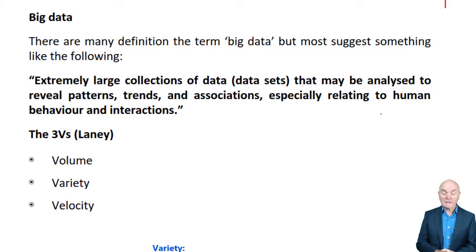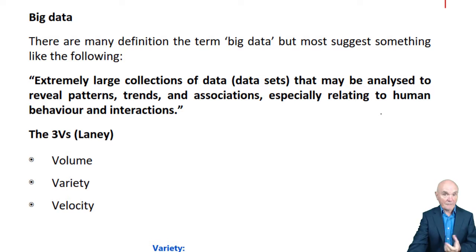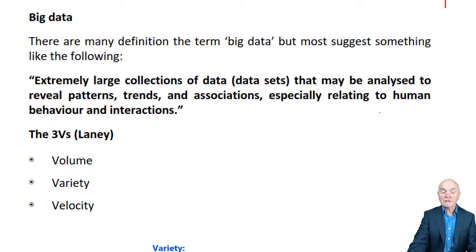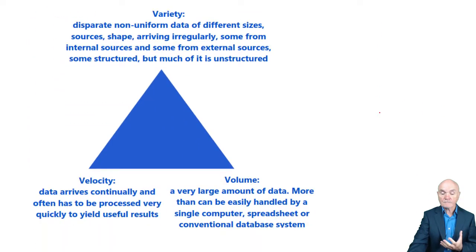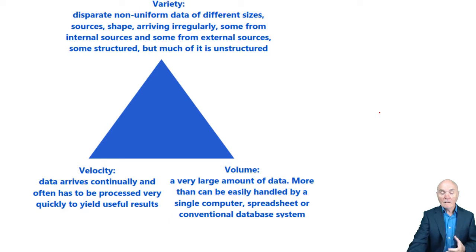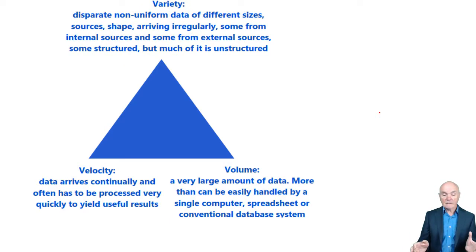And velocity — the data is changing extremely rapidly, and we have to have IT systems which can update themselves sufficiently quickly. So we have variety, velocity, and volume.